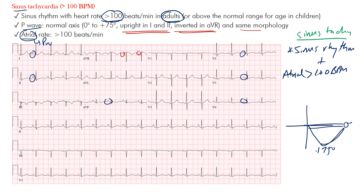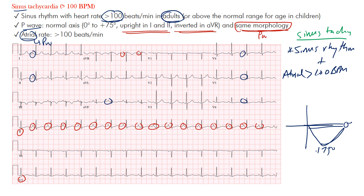We also want to ensure that the P waves have the same morphology. The best way to do this is to look at one of your rhythm strips — lead two or V5 — and check that all P waves look the same throughout. Because of that, you'll also have similar PR intervals if there are no dropped beats. P waves are what we focus on, and the main thing separating sinus tachycardia from normal sinus rhythm or sinus bradycardia is that atrial rate over 100 beats per minute.